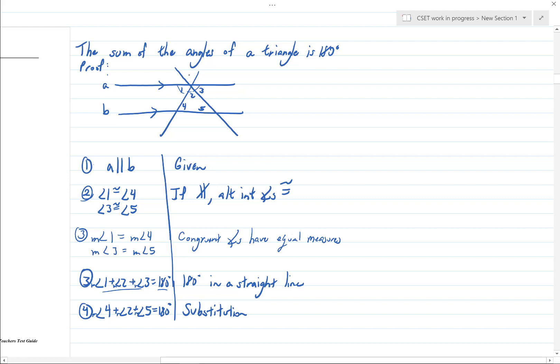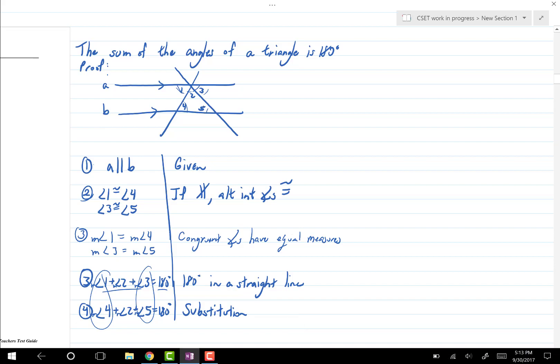That 1 is the same as 4 and 3 is the same as 5. So if you replace 1 with 4 and 3 with 5, we've got that 4 plus 2 plus 5 makes 180. Check. So there we go.